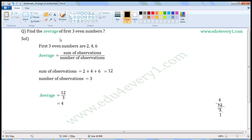Find the average of first three even numbers. First three even numbers are 2, 4 and 6.